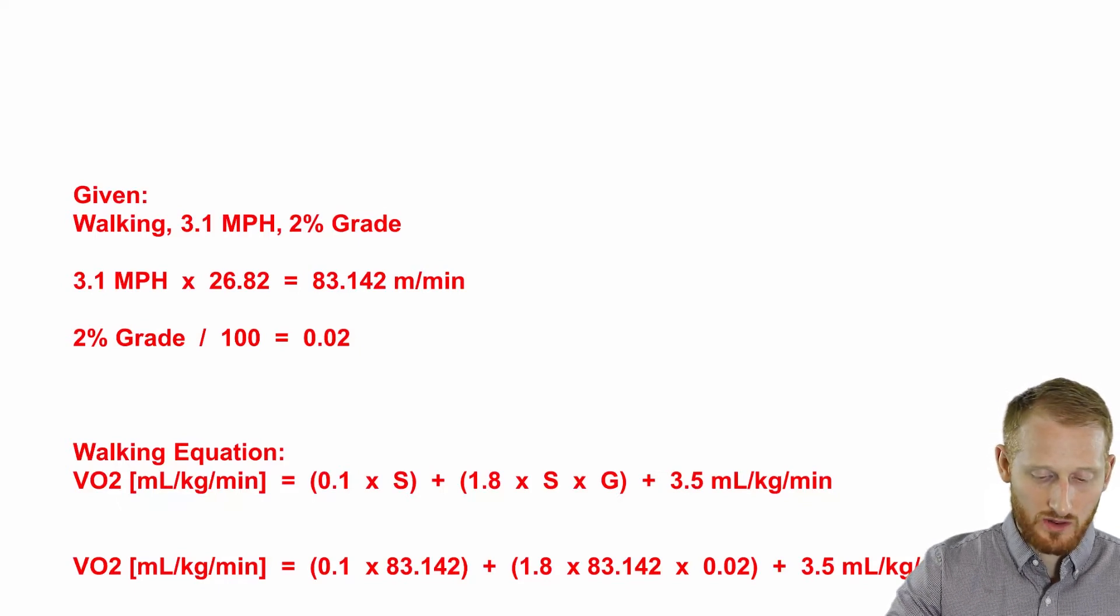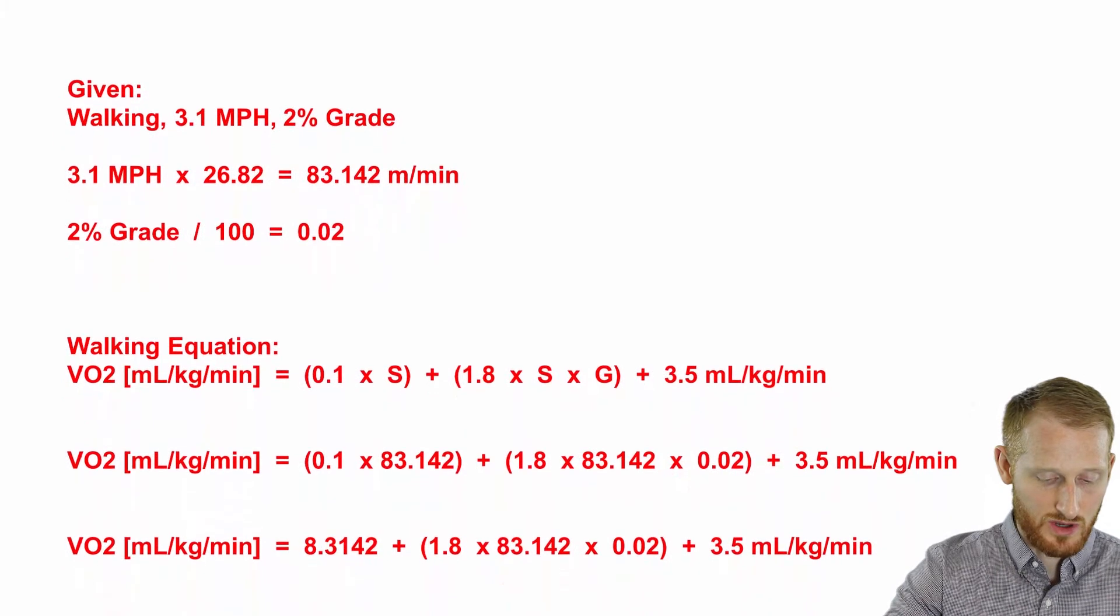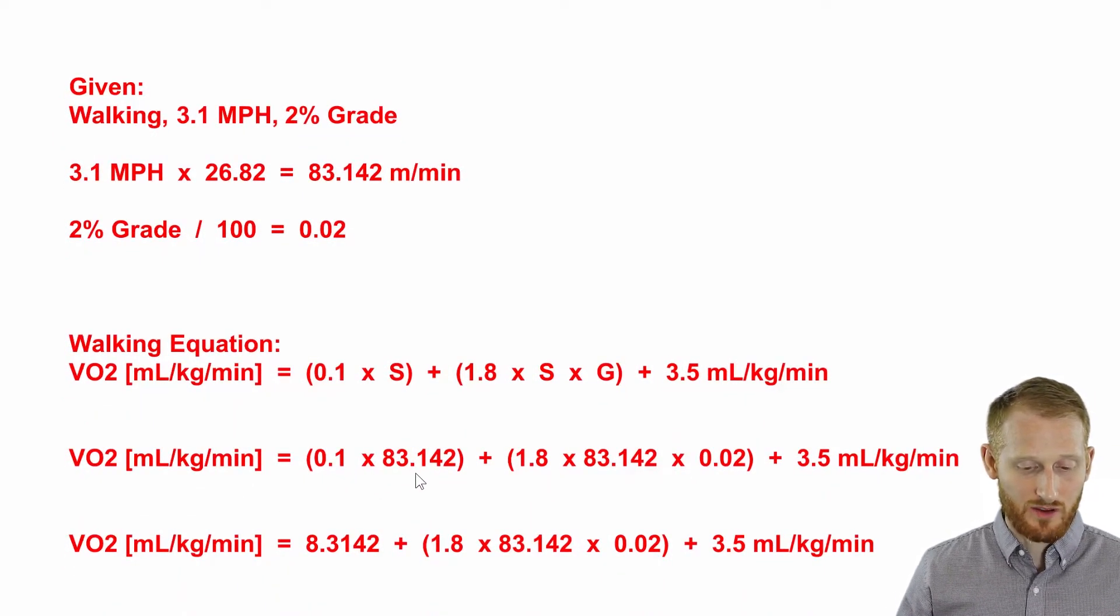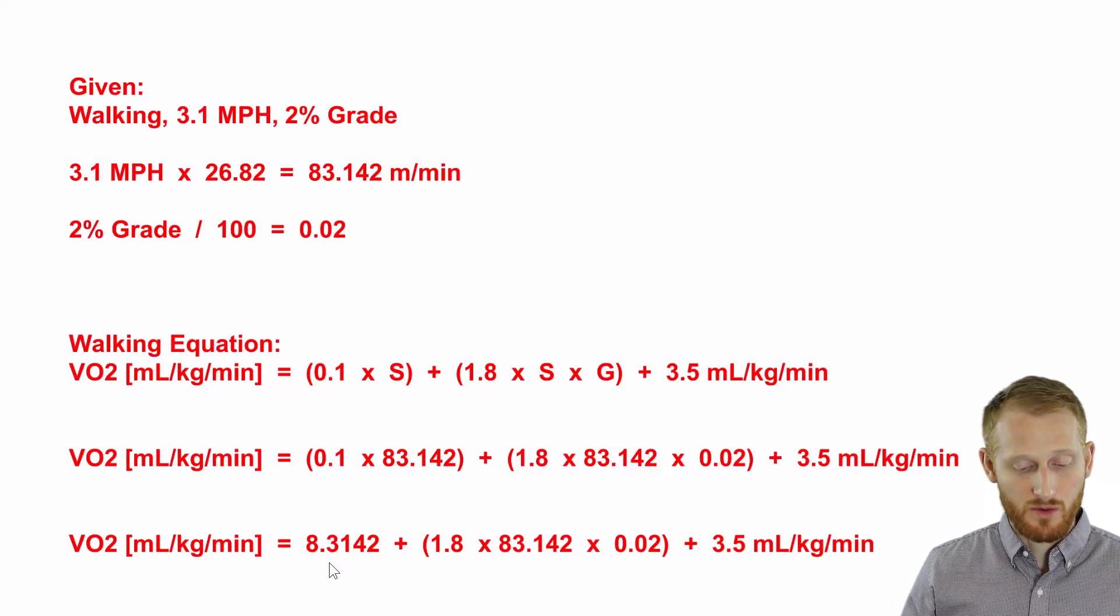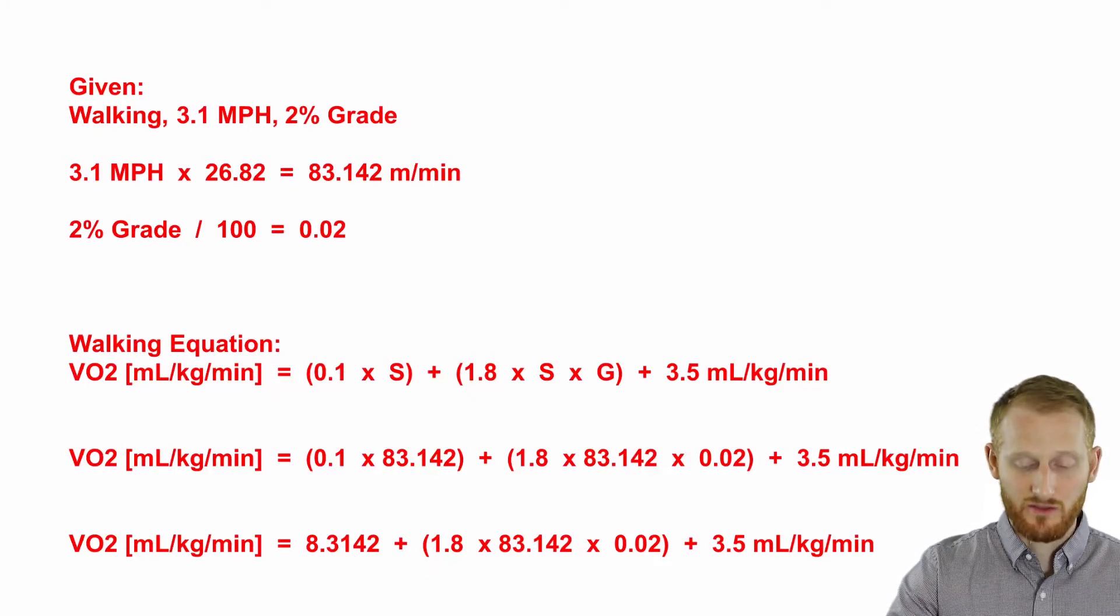Let's do this step by step. The first thing we're going to do is multiply 0.1 times 83.142, and we end up with 8.3142. Now we're going to start working on the second set of parentheses now that we took care of the first set.